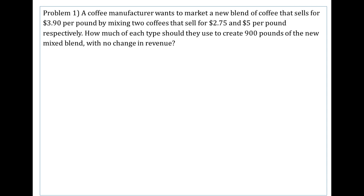The first example: a coffee manufacturer wants to sell a new blend going for $3.90 per pound. They'll accomplish that by mixing two coffees that sell for $2.75 and $5.00 respectively per pound. We want to know how much of each type they should use to make 900 pounds of the new blend without losing any money.